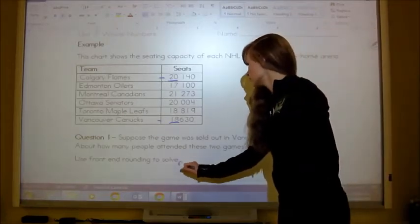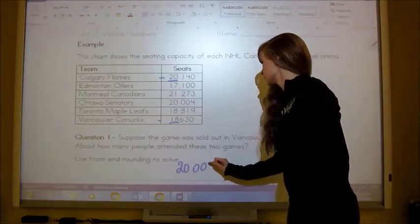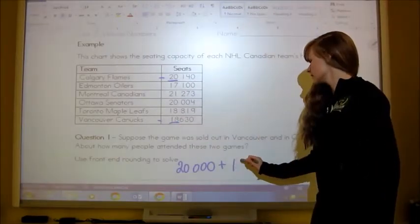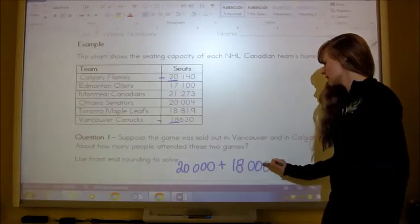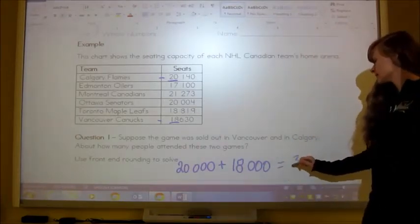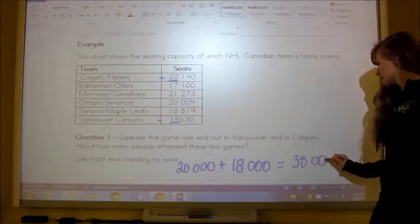So we just go 20,000 plus, and then we just look at the 18. We ignore that the six is there and technically would bump it up. And then we go 20 plus 18. Oh, that's easy. That's 38. So 38,000.